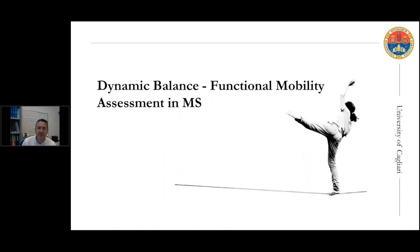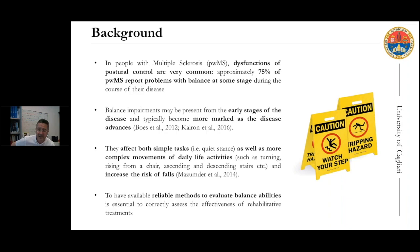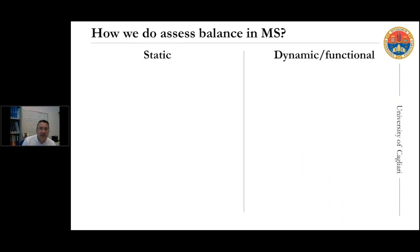We also performed measurement of dynamic balance and functional mobility in multiple sclerosis and in Parkinson's disease. Similar to what occurs for gait dysfunction, most patients with MS report problems with balance at some stage during the course of the disease. Balance impairment may be present from the early stages and typically tends to worsen as the disease advances, affecting not only simple tasks like quiet stance but also more complex activities like turning, rising from a chair, ascending or descending stairs, and of course increasing the risk of falls. It is important to have reliable methods to evaluate balance abilities and assess the effectiveness of rehabilitative or pharmacologic treatments.